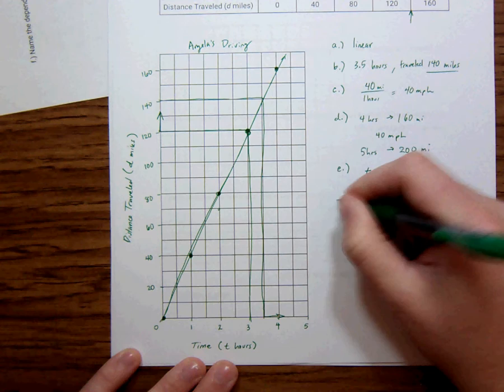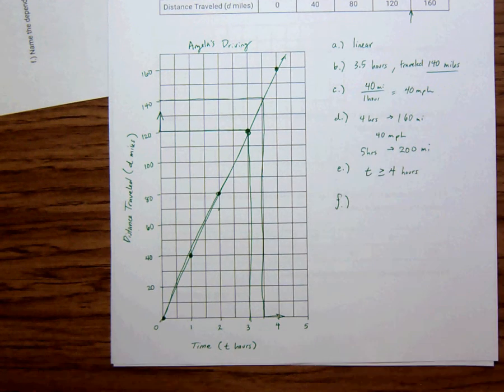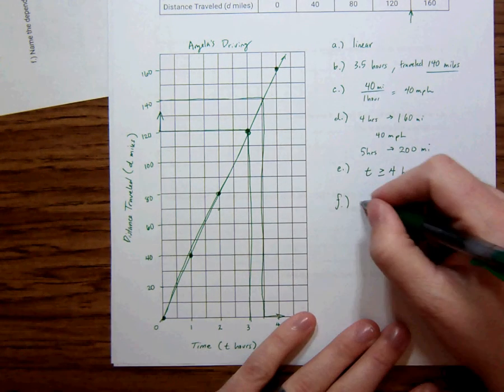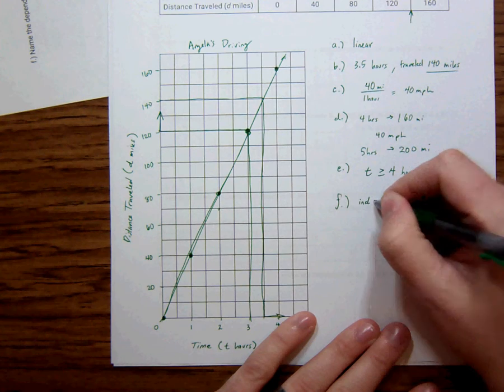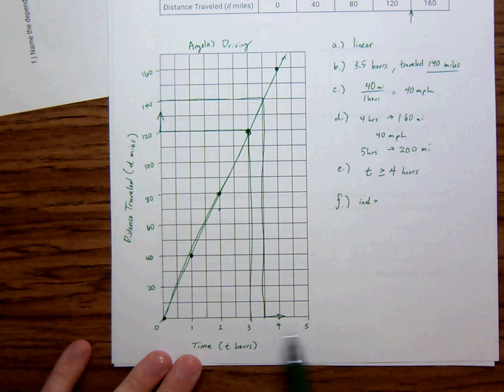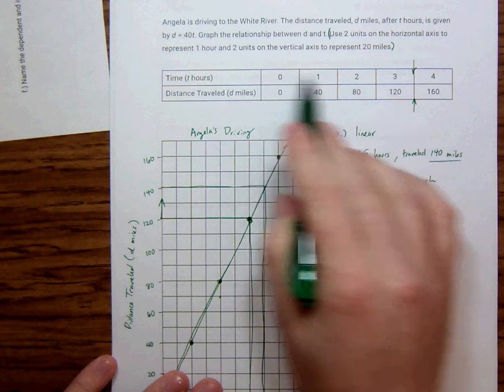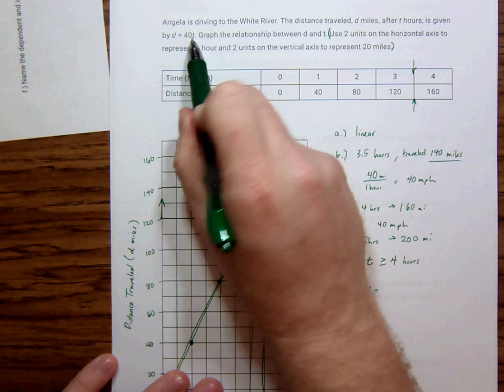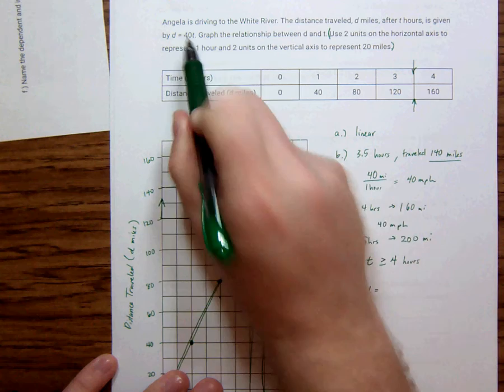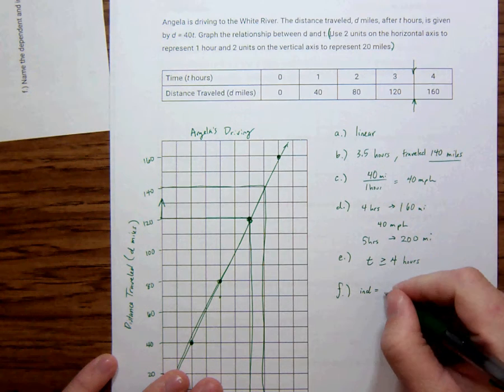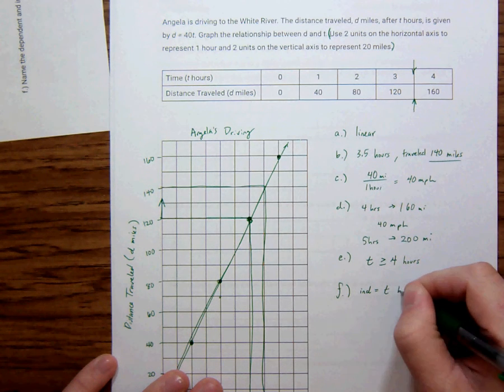And then finally, F is what is the independent and dependent variable. So the independent variable is always the horizontal. It's always the top of this graph. And it's always the one that is not alone, the variable that's not alone. So the independent variable is T for hours.